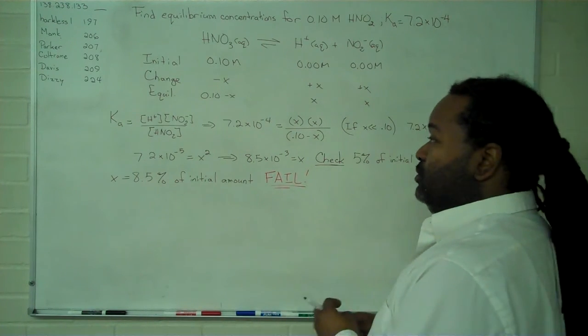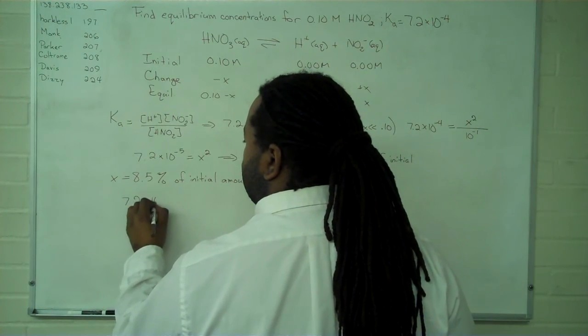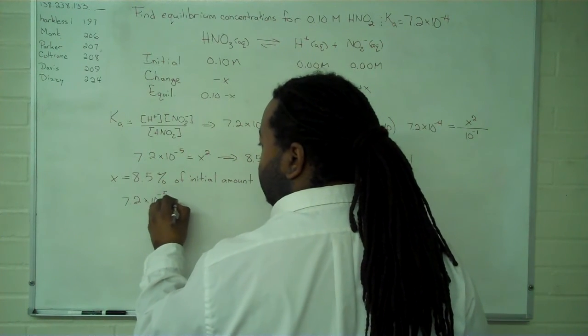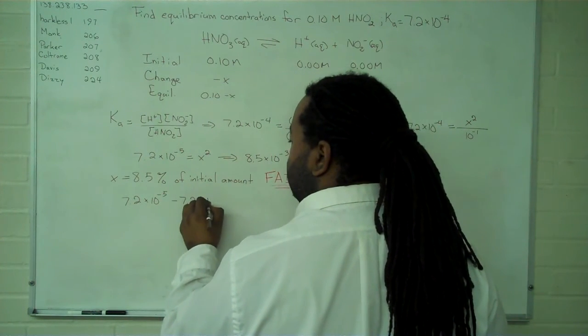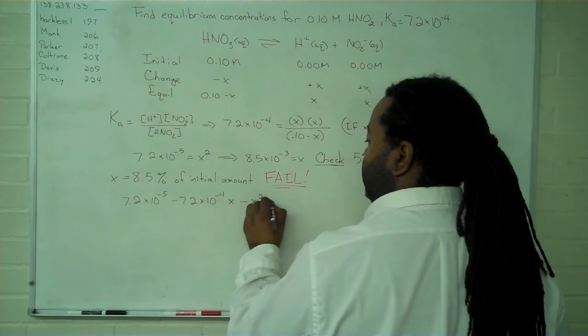What we can do is use a quadratic formula, and that's going to give us the following result: 7.2 times 10 to the negative 5 minus 7.2 times 10 to the negative 4 times x minus x squared equals 0.